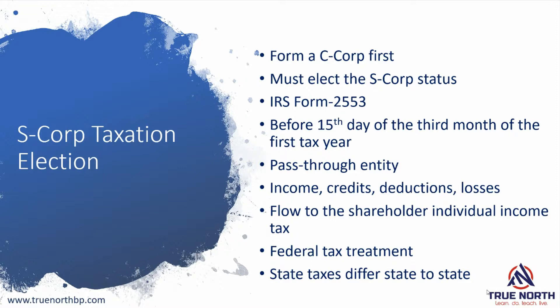Once you're approved as an S corp, your business is now a pass-through entity. That means all of the income, the credits, the deductions, and the losses of the business flow through to the individual shareholders. The business — the corporation — no longer files a corporate income tax. The shareholders individually, based on the income that flows and passes through to them, file their own individual income taxes.